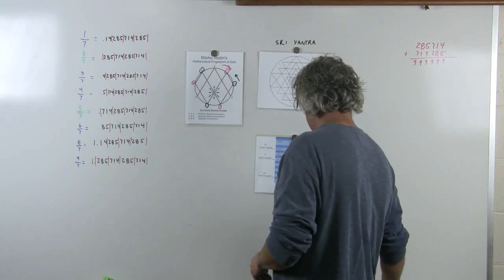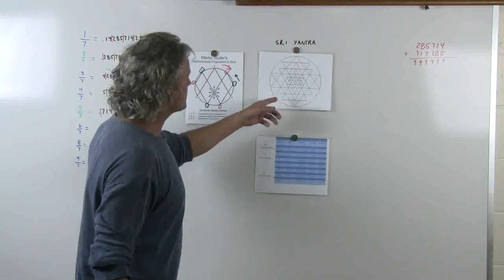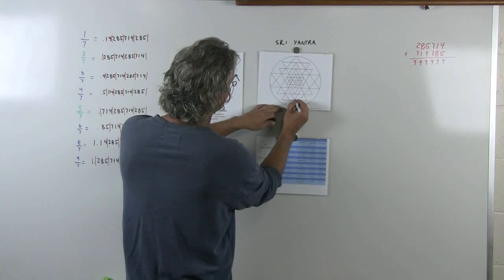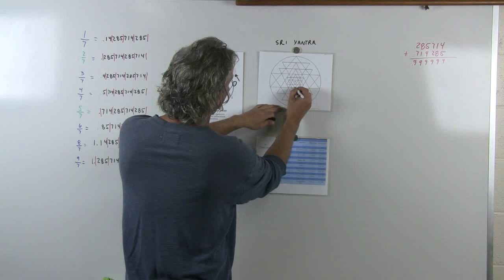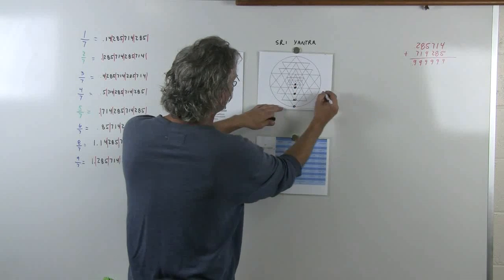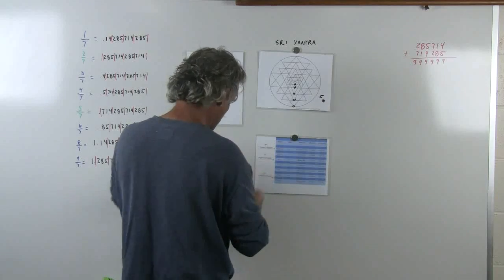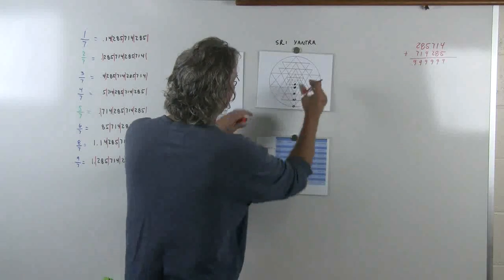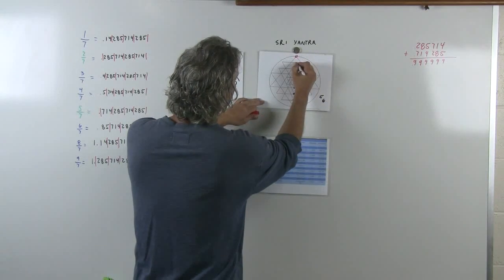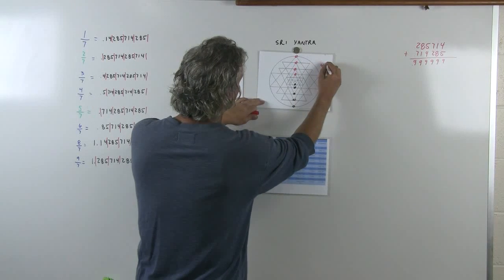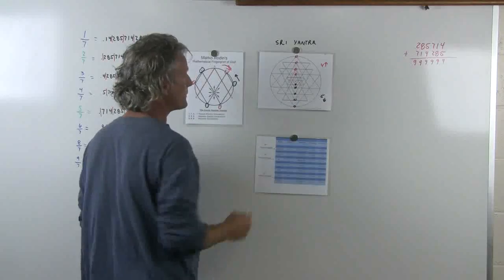There's a couple of other things I wanted to show. This is the Sri Yantra, for example, and you see we have 1, 2, 3, 4, 5. We have 5 triangles that are pointing down. And we have 1, 2, 3, 4 triangles pointing up. Now, could this be the perfect 4th and the perfect 5th?